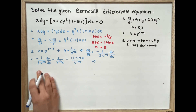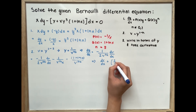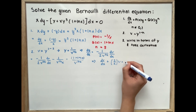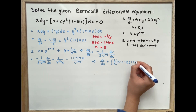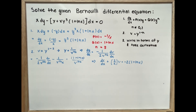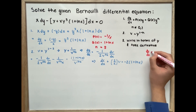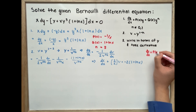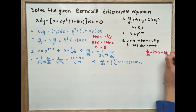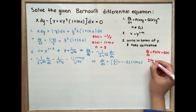Simplifying, we get dv over dx plus 2 over x times v. If you look carefully, this is written in terms of dv over dx plus P(x) times v equals Q(x), which is known as a linear first order differential equation.